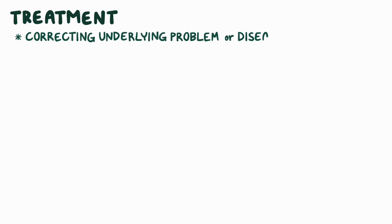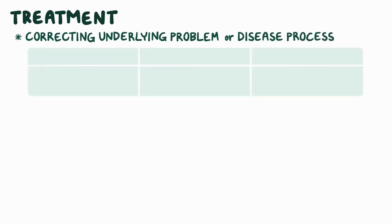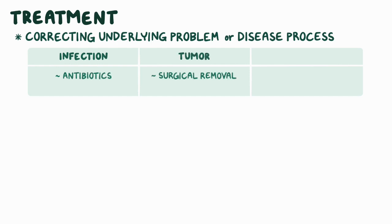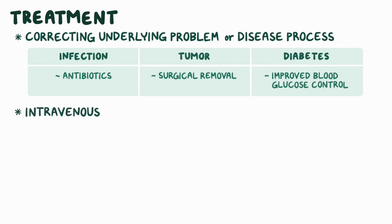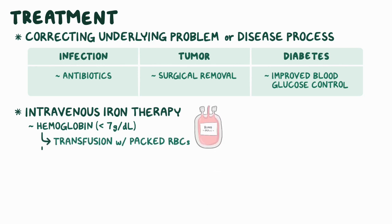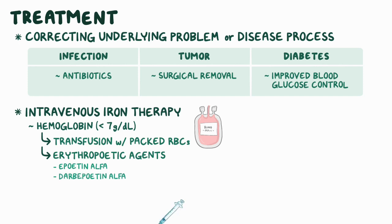Treatment of anemia of chronic disease requires correcting the underlying problem or disease process. For example, if the anemia is due to an infection, appropriate treatment with antibiotics may be necessary. If a person has a tumor, surgical removal of the tumor may lead to resolution of the anemia. Similarly, if the anemia is due to diabetes, improved blood glucose control may result in an improvement in the anemia. Intravenous iron therapy can sometimes be useful, and when hemoglobin levels fall below 7 grams per deciliter, transfusions with packed RBCs or erythropoietic agents like epoetin alpha or darbepoetin alpha may be given to improve symptoms.